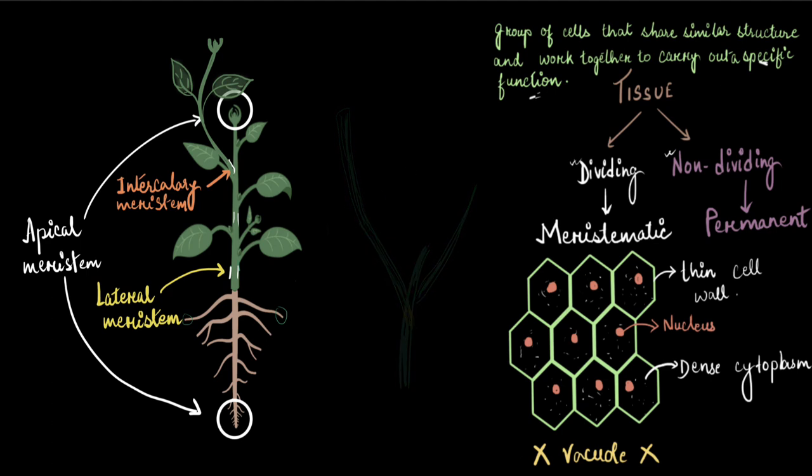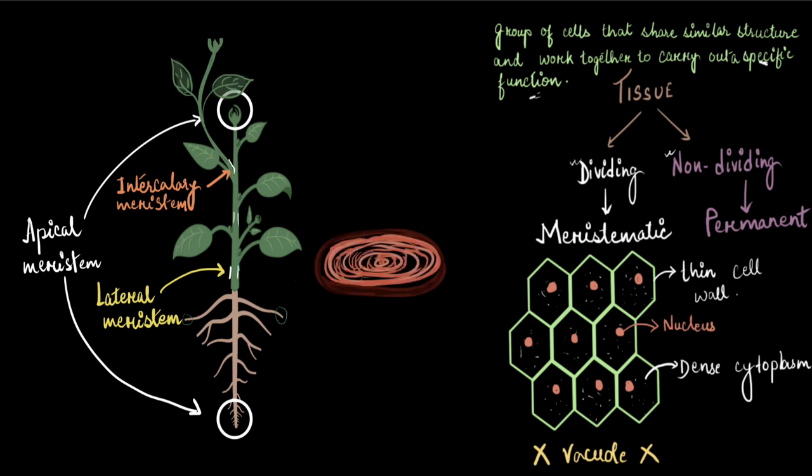Now let's talk about the lateral meristem that increases the diameter or width or girth of the plant body, especially woody plants. When you see the cross section of a big trunk of a woody tree, you will see rings like this. These are formed by the division of lateral meristem. These are called annual rings, and we can find out the age of a plant by calculating these annual rings.